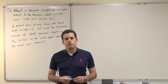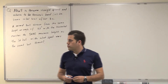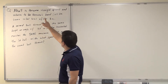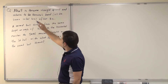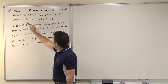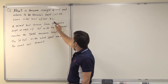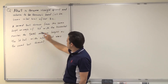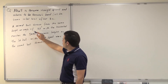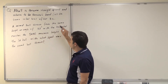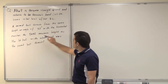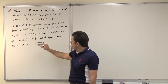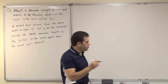As-salamu alaykum. Today we're solving questions from chapter 4 on projectile motion. The question reads: a ball is thrown straight upward and returns to the thrower's hand at the same initial level after three seconds. A second ball thrown from the same height at an angle of 37 degrees with the horizontal reaches the same maximum height as the first ball. With what speed was the second ball thrown?